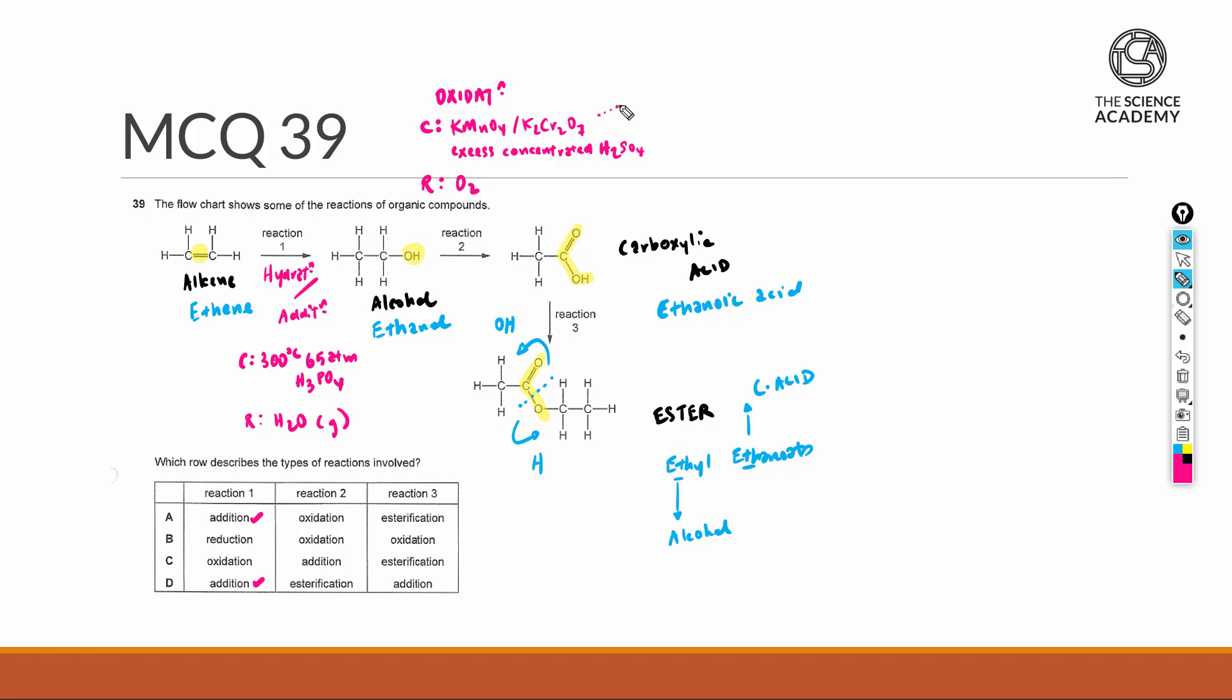KMnO4 or dichromate is acting as an oxidizing agent to help oxidize your alcohol to carboxylic acid. The concentrated sulfuric acid here is acting as a drying agent because the end of this reaction does produce water that could contaminate the carboxylic acid that you will want to remove.